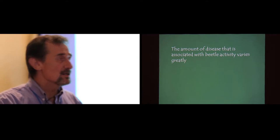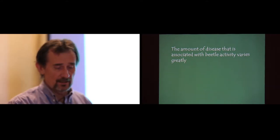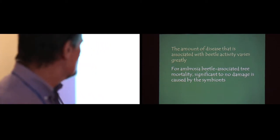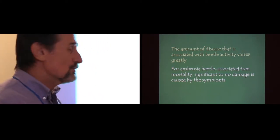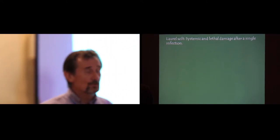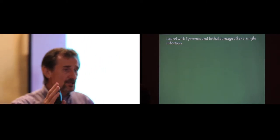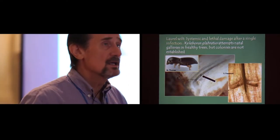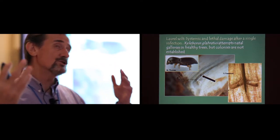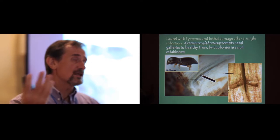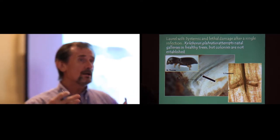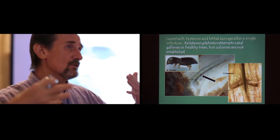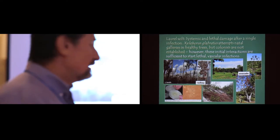Okay. The amount of disease that is associated with beetle activities varies greatly. For an ambrosia beetle associated damage that occurs, the mortality, there's significant to no association with these symbionts. So, the worst case scenario is this laurel wilt, this disease that I and Jorge and Daniel and others in the room work on, where systemic and lethal disease development occurs after a single infection. We think what happens is that the vector xyleborus glabratus, the female is confused, she goes to a healthy tree, assuming that she can establish a brood in it, does not establish a brood in it, but in that one initial interaction, that's sufficient then to infect the tree with the pathogen, and it's off to the races.